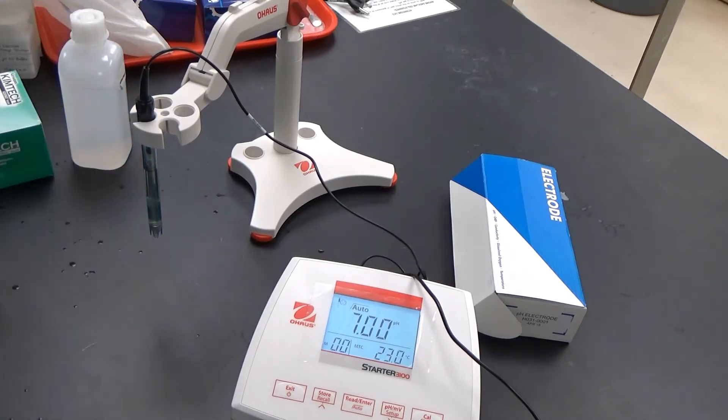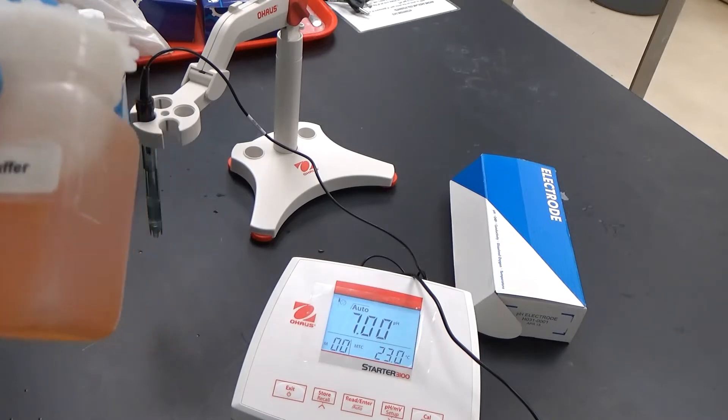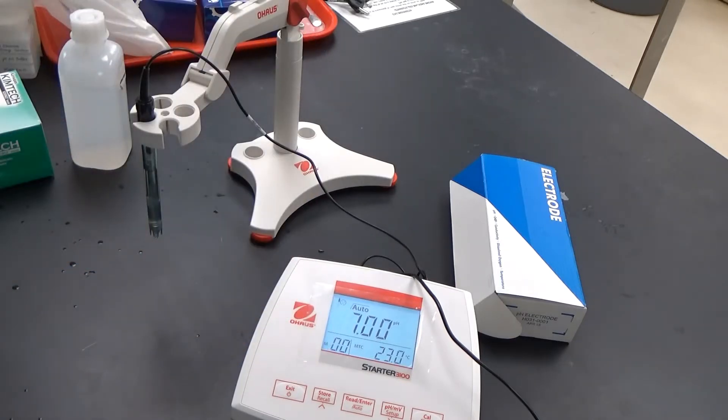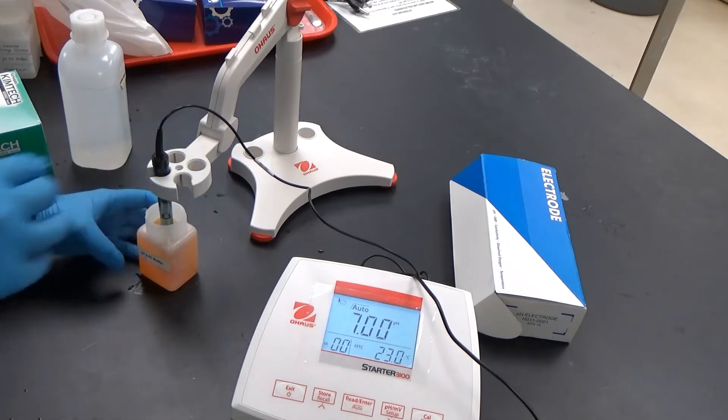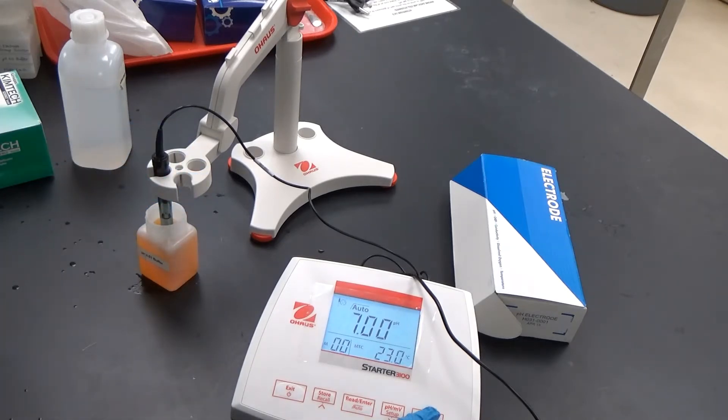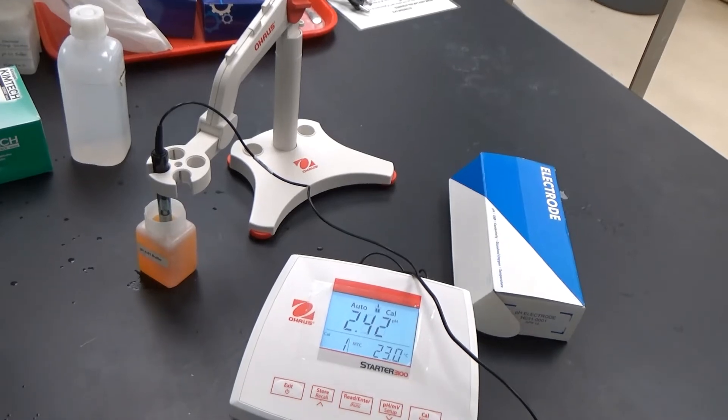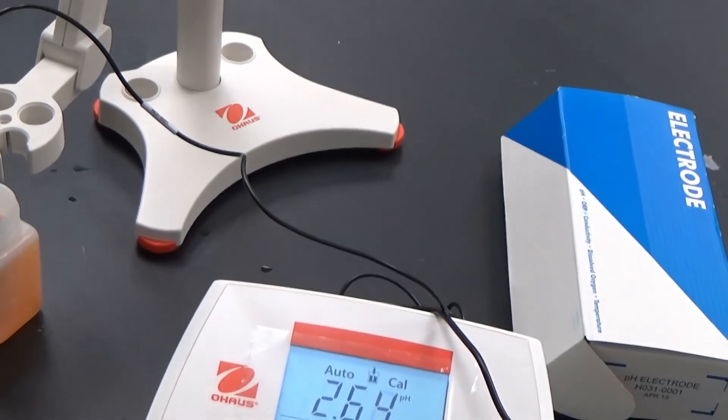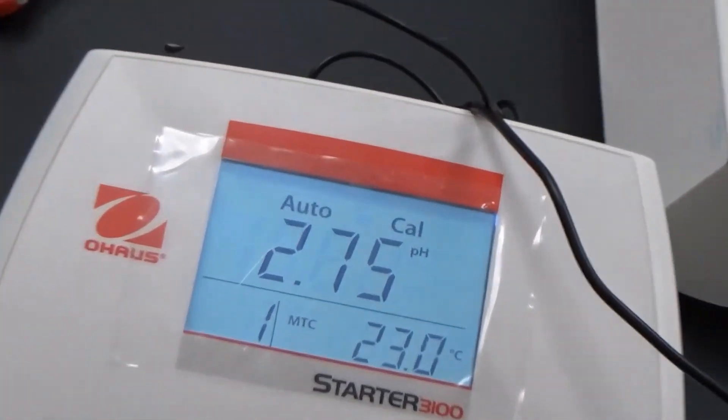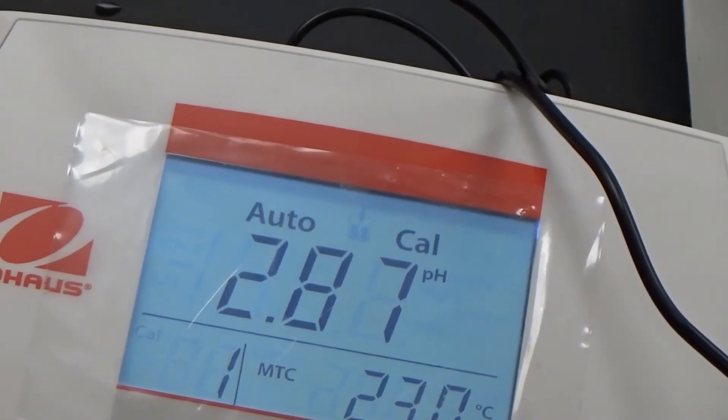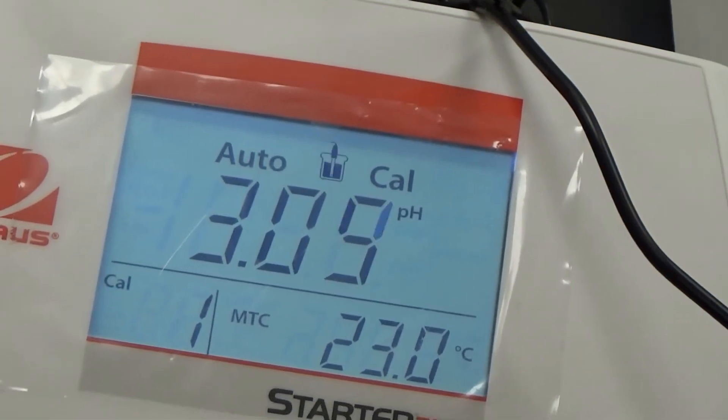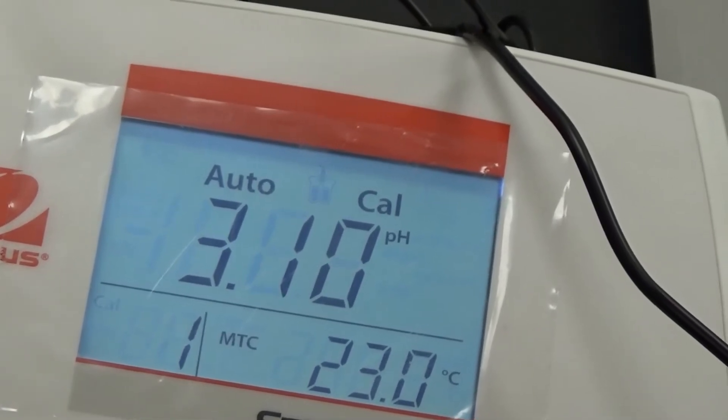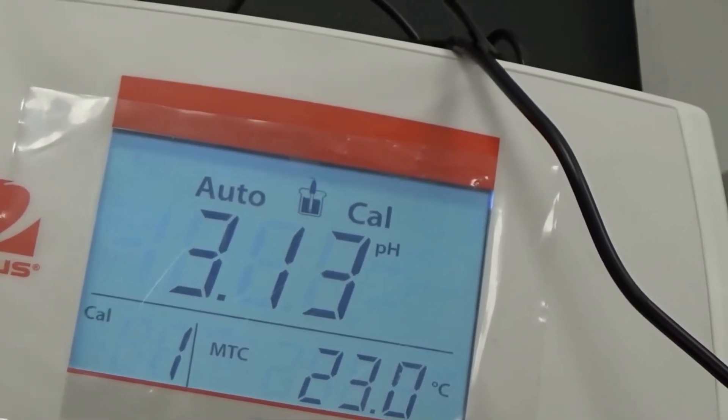So you don't damage the electrode, but you do want to dry it enough. We're going to start with pH 4 buffer and put the electrode into your buffer. Now hit the cal button on the far right. It is blinking as it's searching for the pH. This might take a minute, so be patient.